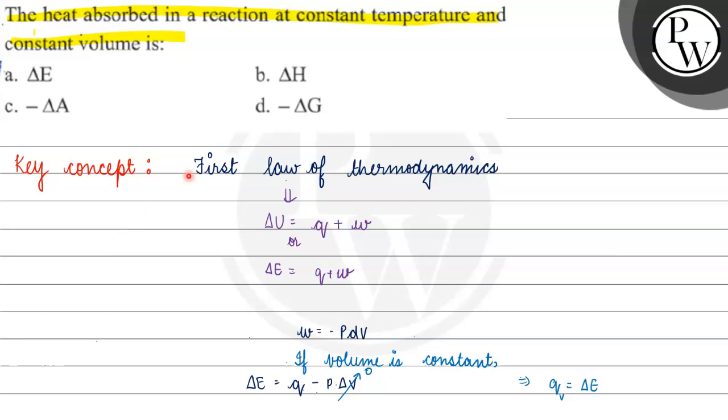Now, if we talk about delta H, then delta H is basically heat absorbed or gained in a reaction when we have constant pressure. Delta A is Helmholtz free energy, and in option D, we have delta G, Gibbs free energy.